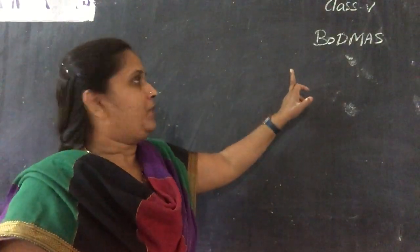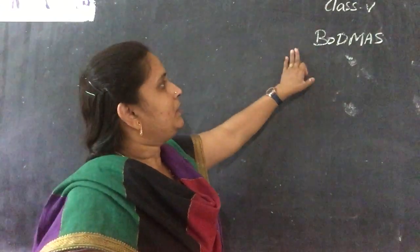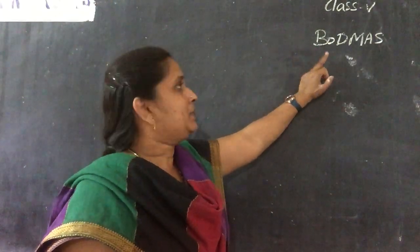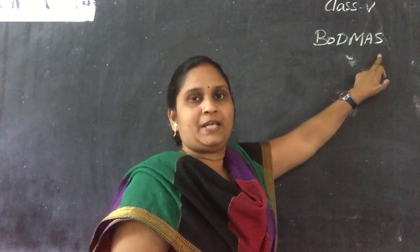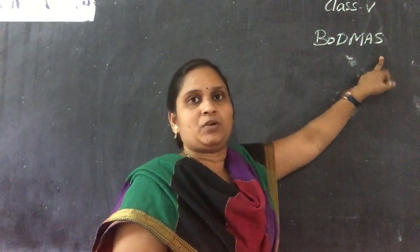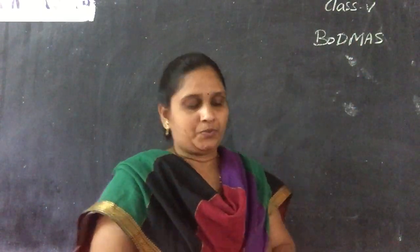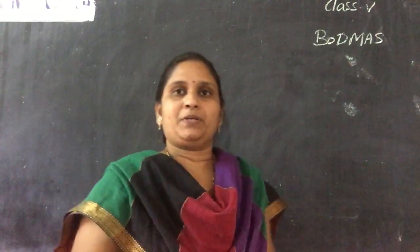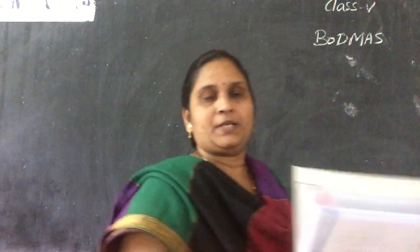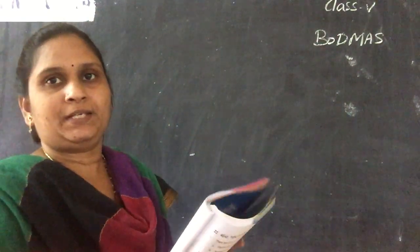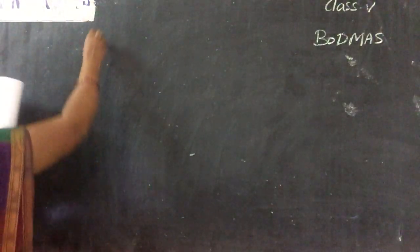BO means the sums in the bracket must be done first. After that, Division, then Multiplication, A for Addition, and S for Subtraction. This is the process we have to follow. Open your BODMAS notebook and write the first sum. There are overall six sums — I will explain some and the remaining you have to do as homework.